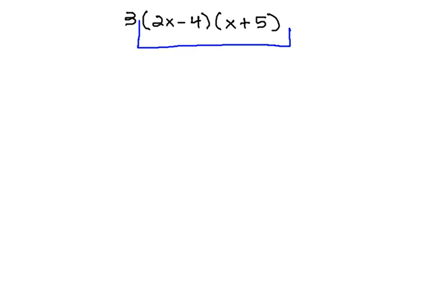Here, we're multiplying 3 times 2x minus 4 times x plus 5. I'll start by multiplying out the binomials first, keeping the 3 in front of the resulting expression.